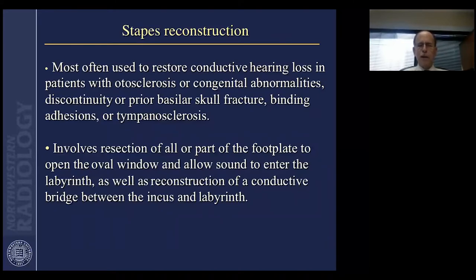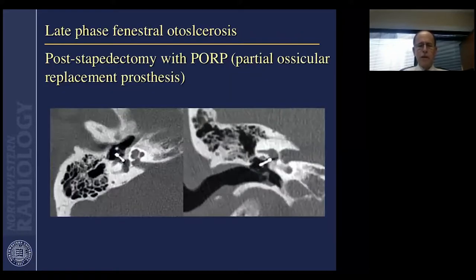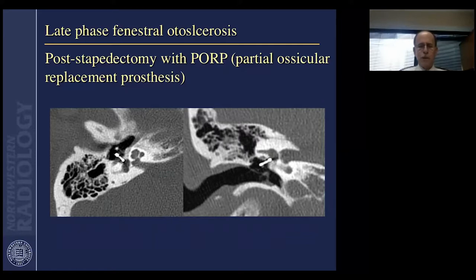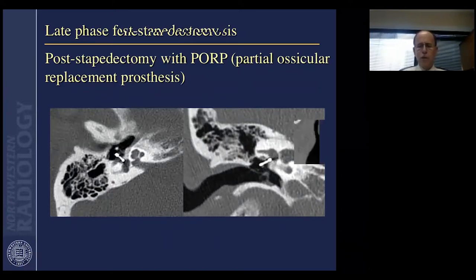Stapes reconstruction may be done, usually involving resection of all or part of the stapes footplate, which opens the oval window and restores continuity. A PORP — partial ossicular replacement prosthesis — involves replacing only part of the ossicular chain. If you had no ossicles left and wanted to replace the whole chain, it would be a TORP — a total ossicular prosthesis. In this late case of otosclerosis, there's a huge amount of bone built up over the cochlea that has been drilled out posteriorly, and the prosthesis at the oval window helped restore conductive hearing.